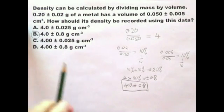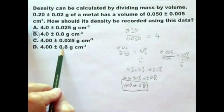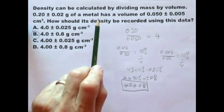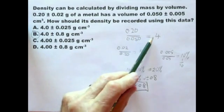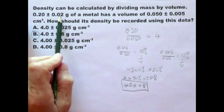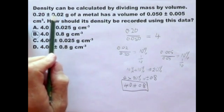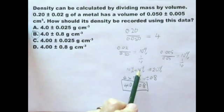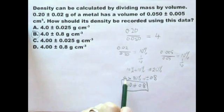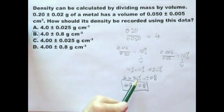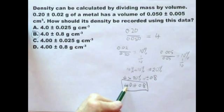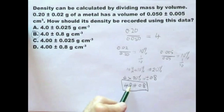Let me summarize. First, check whether you can eliminate incorrect answers. Second, do the calculation: for division or multiplication, compute the result. Then look at the accuracies — the plus or minus numbers — as a percentage of the number: 0.02 over 0.2. Add the two percentages, then multiply the answer by that figure to get the absolute accuracy, 0.8. Put it with the answer and make sure the number of decimal places is the same in both numbers.